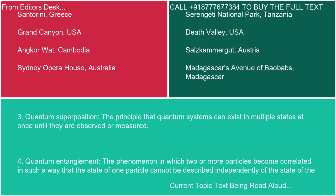4. Quantum Entanglement: The phenomenon in which two or more particles become correlated in such a way that the state of one particle cannot be described independently of the state of the others.